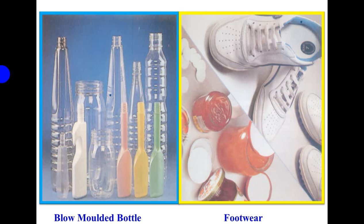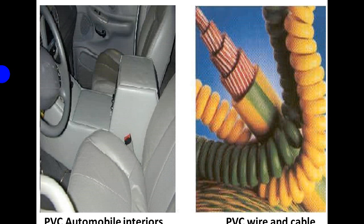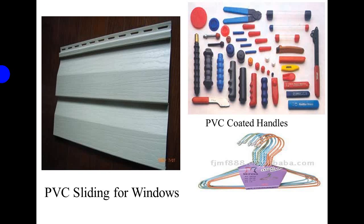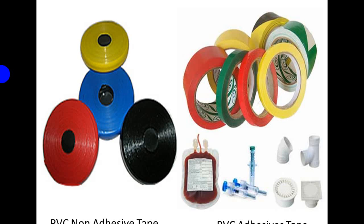These are the applications of PVC - it is used for moulded bottles, footwears, rigid PVC pipes, house pipe joints, flexible pipes, automobile industry interiors, decoration, wire and cable manufacturing, PVC floor and tiles manufacturing, window sliding windows and handles of different instruments, covering of hangers, transmission set handles, PVC medical tubes and medical instruments, non-adhesive tapes and adhesive tapes. These are the different items and products made by PVC, and on the basis of this utilization, PVC is a great and important polymer.